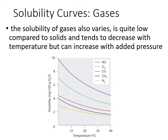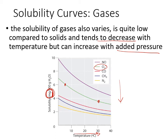For gases, solubility also varies but tends to decrease with temperature. As water temperature goes up, the solubility of gases goes down. For example, oxygen can dissolve more at around 5°C than at 30°C. Also note that gas solubility is measured in milligrams rather than grams per 100 milliliters — gases are much less soluble than solids. Pressure also affects gas solubility: higher pressure increases solubility, as seen when a pressurized carbonated beverage is opened and bubbles escape as pressure drops.